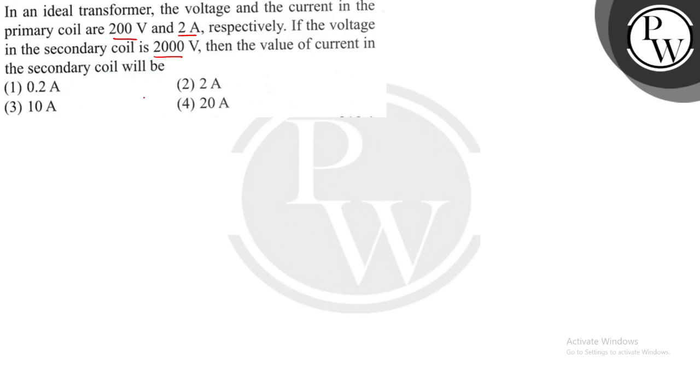So how many? The voltage in primary is 200 volt, current in primary is 2 ampere, and voltage in secondary is 2000 volt.